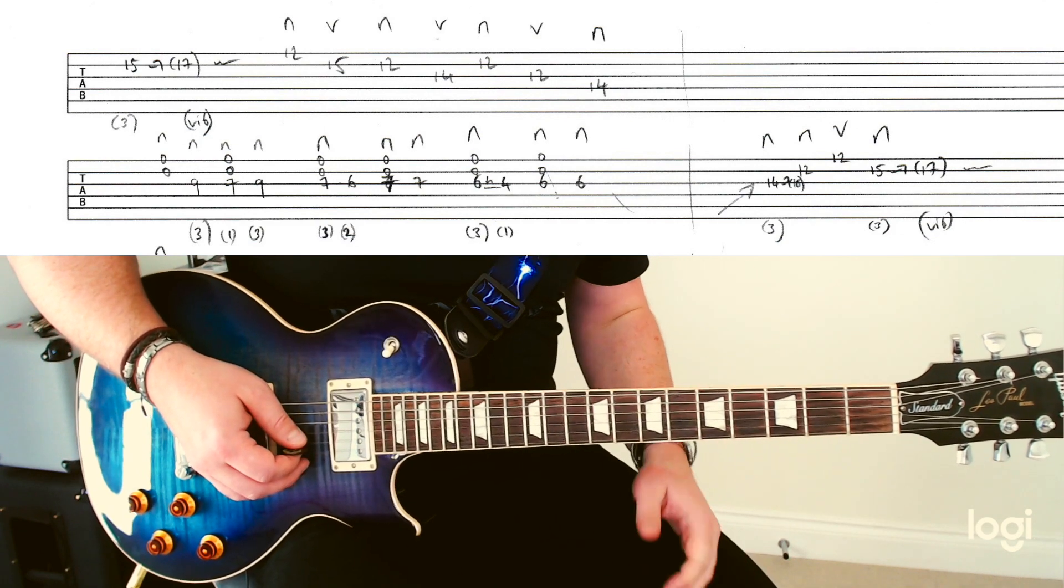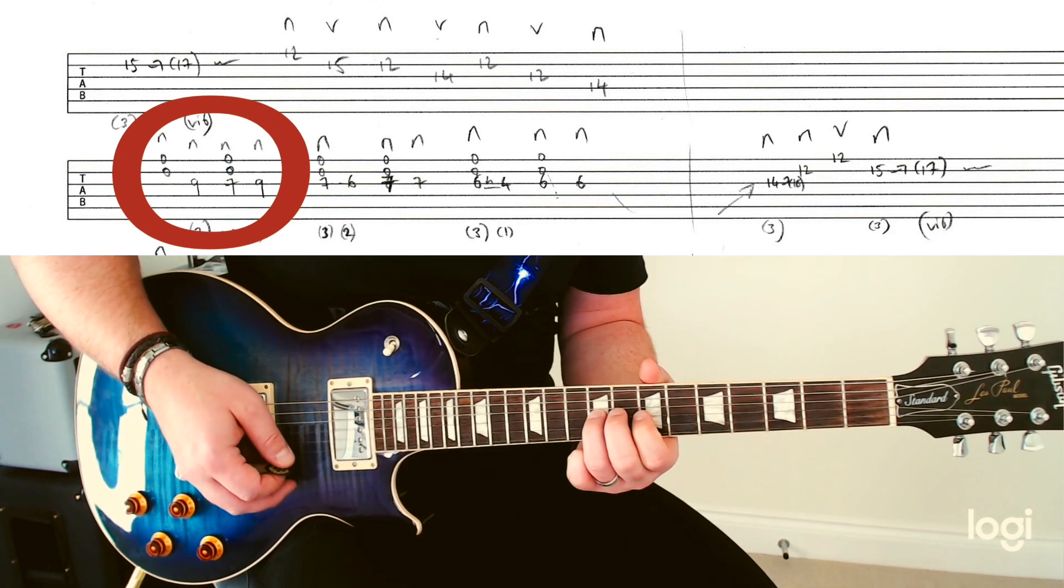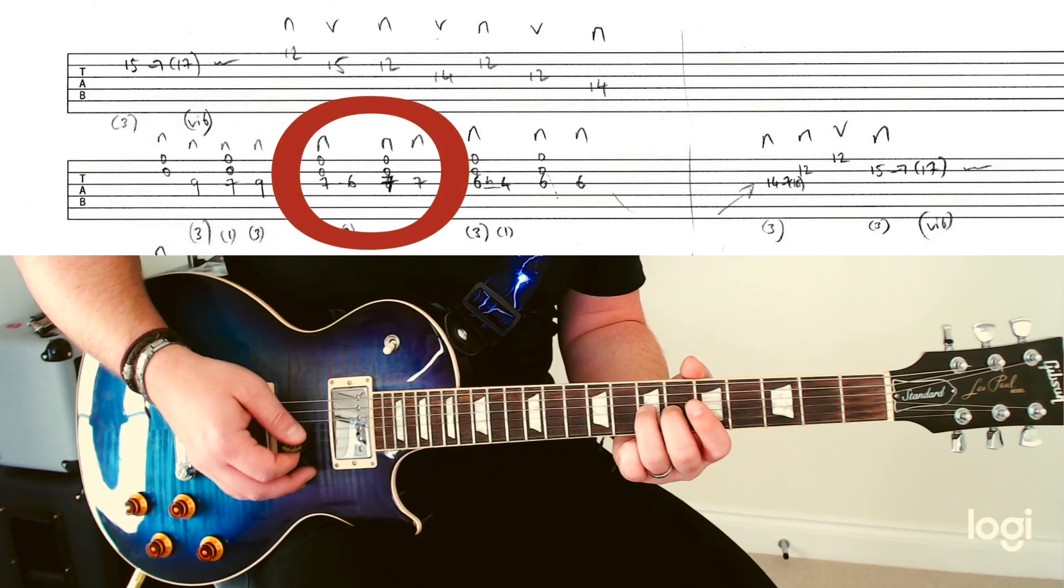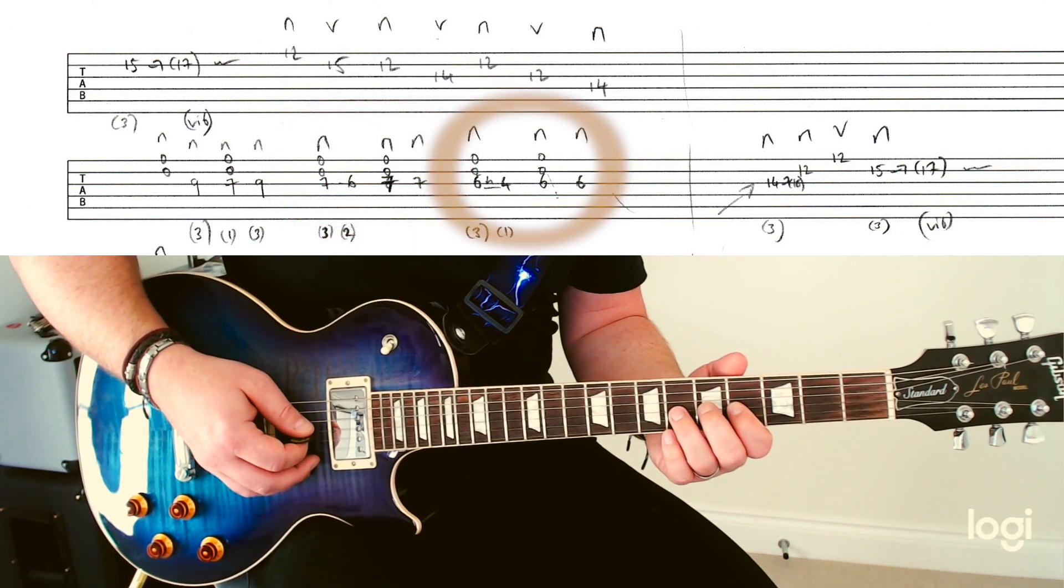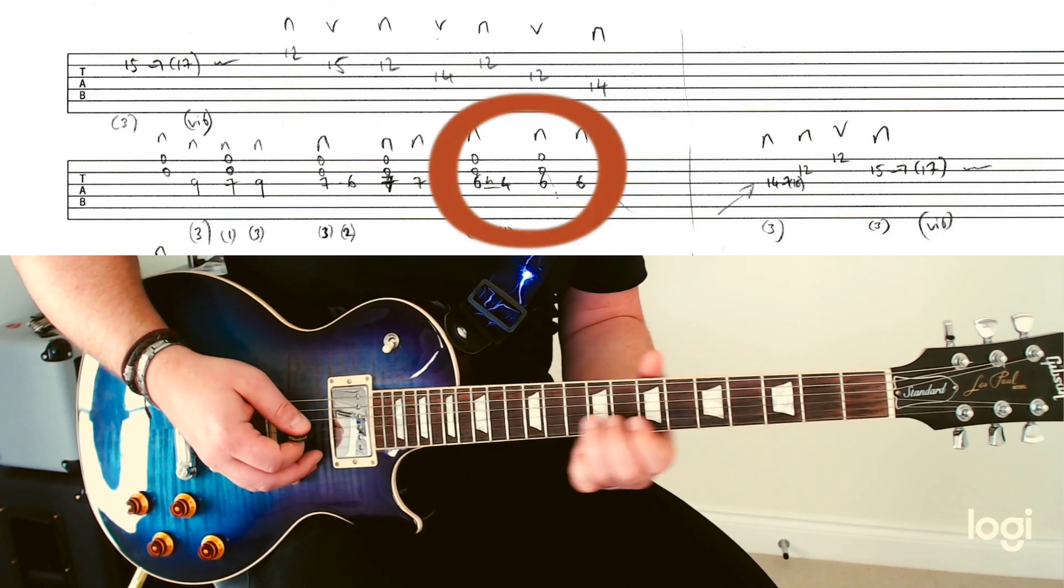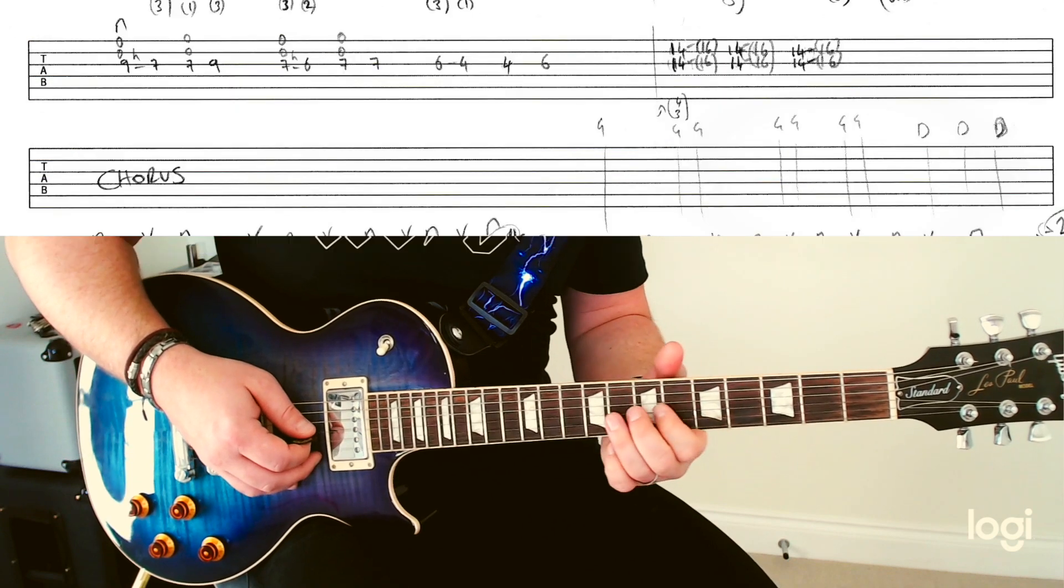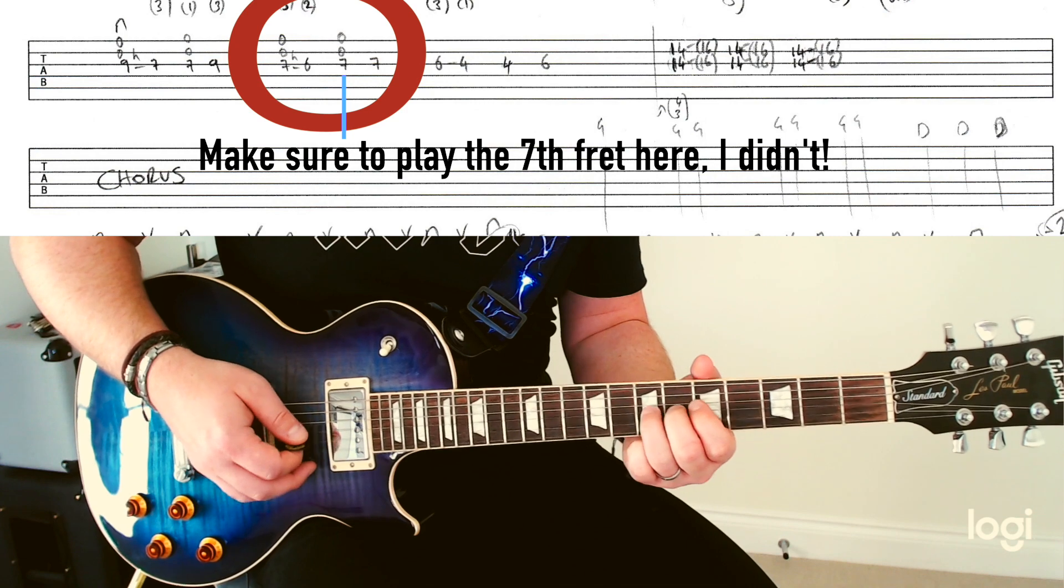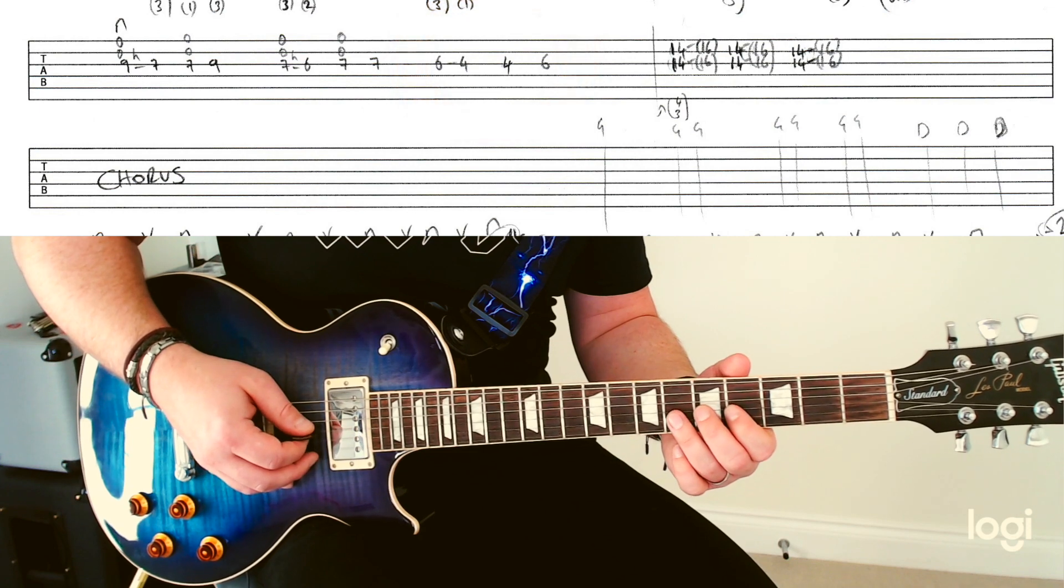So hit those open strings. Jump up to the 9th fret on the G string. Then you want to slide down with your 3rd finger to the 7th fret. Then you're going to take the next shape: 6-4-6-6. Slide up here for this shape. Same again, so we're back to this 9th fret here. Don't hit these open strings for the 3rd shape with this 6-4-4-6.